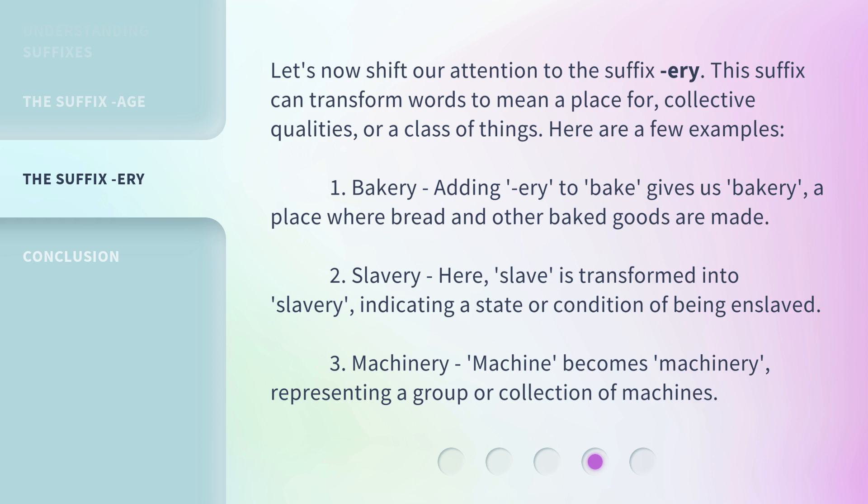Second, 'slavery': 'slave' is transformed into 'slavery', indicating a state or condition of being enslaved. Third, 'machinery': 'machine' becomes 'machinery', representing a group or collection of machines.